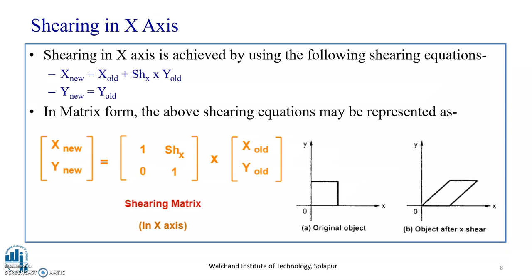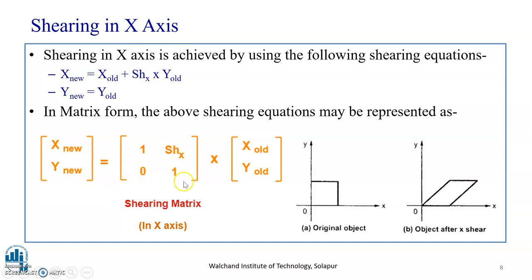As you can see in the diagram, this is the original object. When we apply shearing in the x direction, the change in the original object is observed only in the x direction. The equation is: x-new equals x-old plus shx into y-old, and y-new equals y-old — there is no change in the y coordinate. As you can see, the original object is a square, and when the shearing transformation is applied in the x direction, you see a slant in the object. The matrix form is: [x-new, y-new] = [1, shx; 0, 1] × [x-old, y-old]. This is the shearing matrix in the x direction.